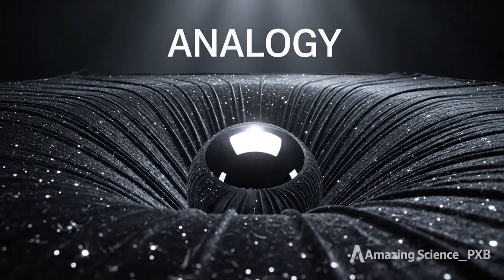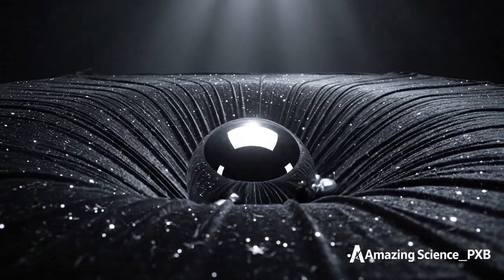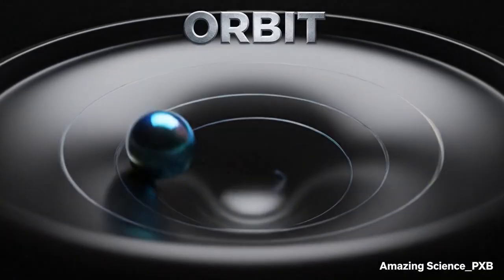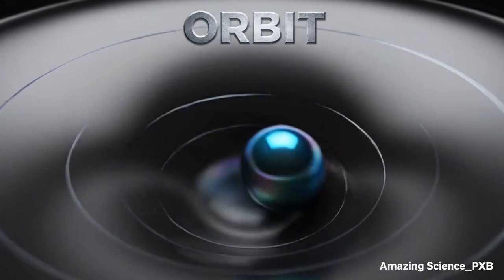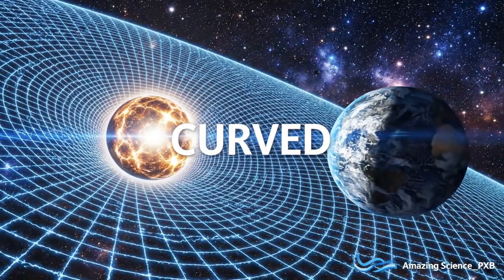Like a heavy ball bending fabric, smaller objects spiral around. Earth follows the Sun's curved space-time.